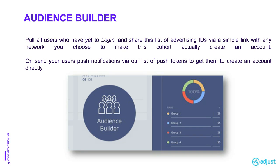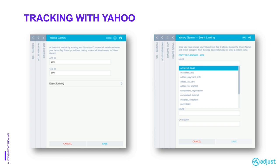All of these features tie directly into our Yahoo partnership and integration. For clients to begin tracking Yahoo Gemini campaigns, they simply need to go to our app settings, partner setup, select their Yahoo module, and then enter the necessary credentials. Adjust is able to send Yahoo not only install and session data, but also any of the custom event data that our clients set up — all in real time.